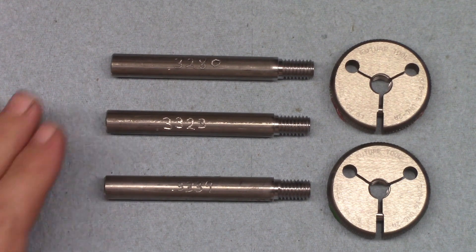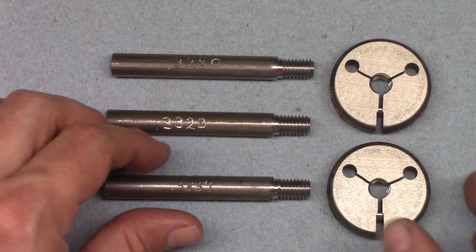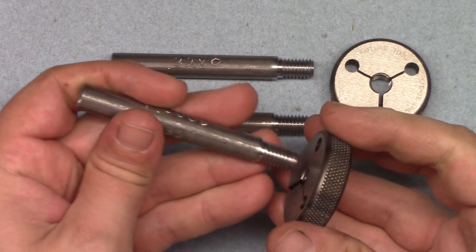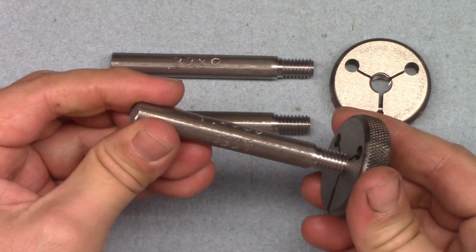I have three parts that I've made, one undersized, one that's in spec, and one oversized. If the go gauge does not thread on, you know your part is too big, and you need to make additional cuts.